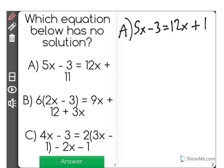The way we're going to do this is move it around so we get x alone on one side of the equation. I'm going to start by adding 3 to both sides, then I'll get 5x equals 12x plus 14.